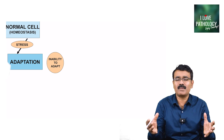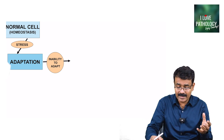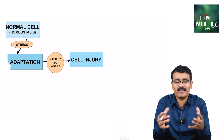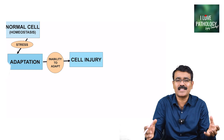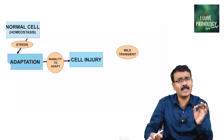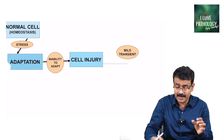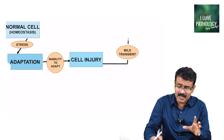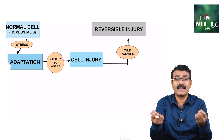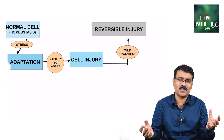If the cells are not able to adapt for some reasons, then we say that the cell is injured — that is what we refer to as cell injury. If the injurious agent is mild and transient, there is always a probability that this injury can be reversed.